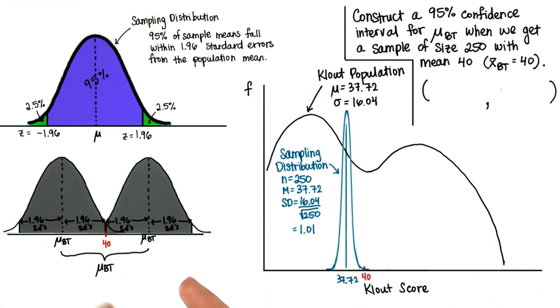So let's again look at how we solved for the last confidence interval. We still know that the true population mean, mu sub bt, is going to be within 1.96 standard deviations of our sample mean.